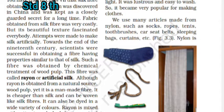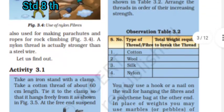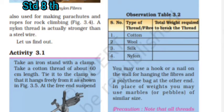Nylon is lustrous and easy to wash, so it became very popular for making clothes. We use many articles made from nylon such as socks, ropes, tents, toothbrushes, car seat belts, sleeping bags, curtains, and many more.